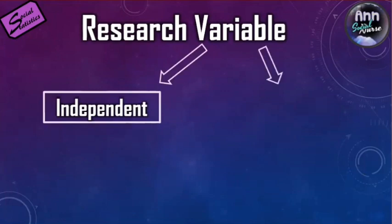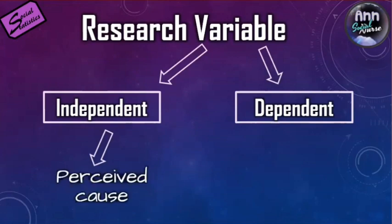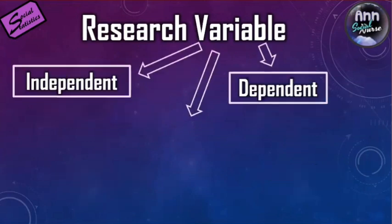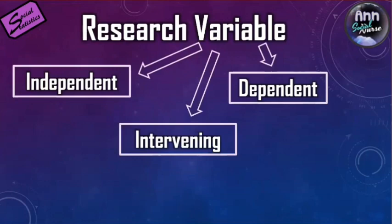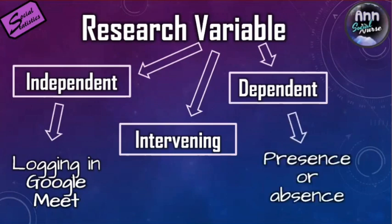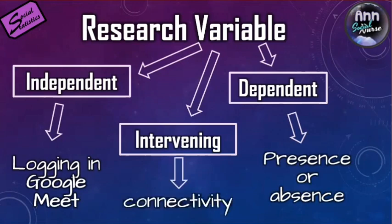The research variable can be an independent variable or a dependent variable — one is the perceived cause and the other is the perceived effect. To easily remember, just think of ID: independent causes the dependent. There is also a third variable, the intervening variable. For example, logging into Google Meet is the independent variable that causes you to be present or absent. Your presence or absence depends on your logging in, the cause. But there could be an intervening variable, like connectivity, which enhances the effect of the independent variable on the dependent variable — that is the interplay of the independent, dependent, and intervening variables.